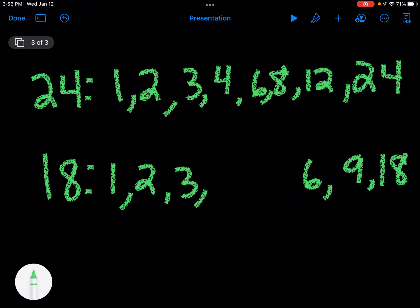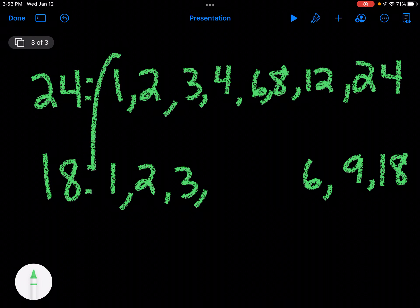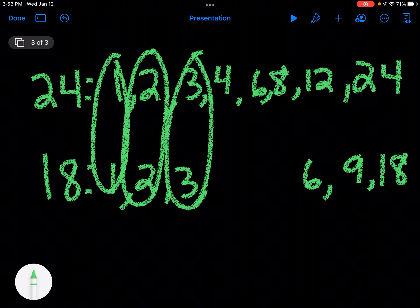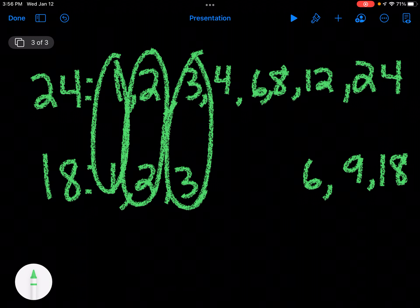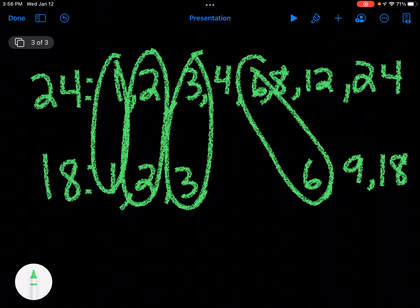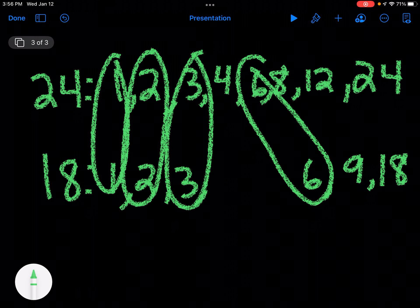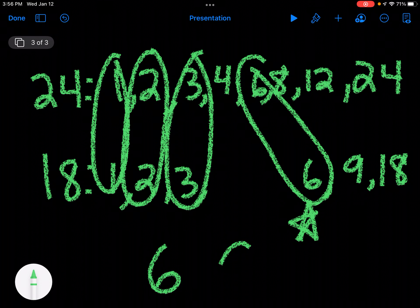So now I'm looking for the greatest common factor, the biggest number they have in common. So I see that they have 1 in common, 2 in common, 3 in common. They don't have 4 in common. They have 6 in common. They don't have 9 in common. And they don't have 18 in common. So 6 is my greatest common factor.